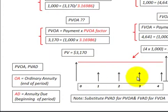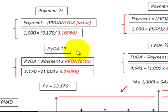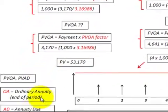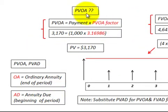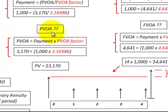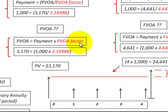We have four equal payments, but we receive them at the beginning of the year starting here. To determine the present value of an ordinary annuity, you need to know the payment amount, then take it times the present value ordinary annuity factor — that determines what the present value of those four payments is. Just remember, for an annuity due, substitute the annuity due factors into the same structure.